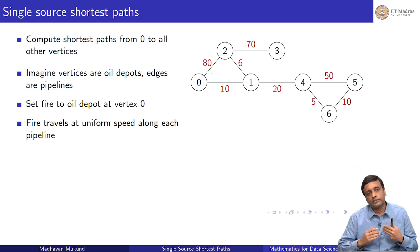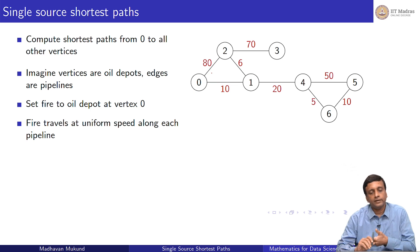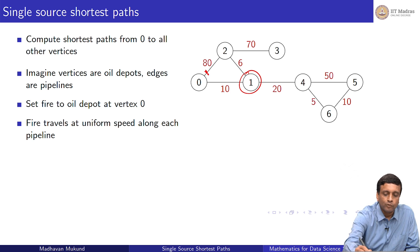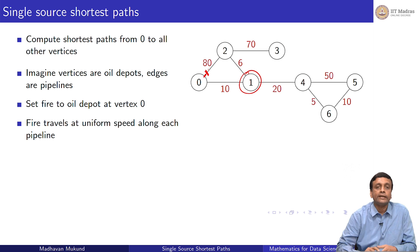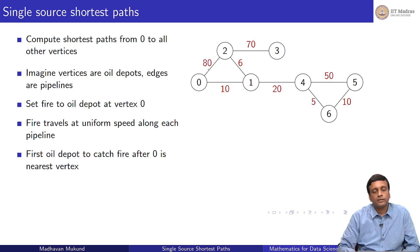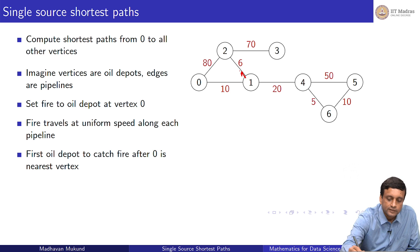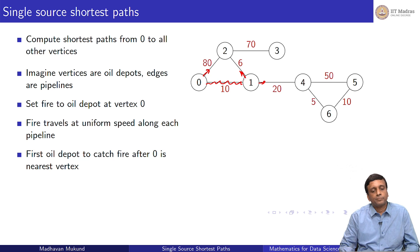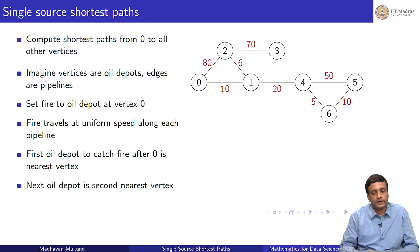If the fire is traveling at a uniform speed, after some amount of time this one will burn. Because this edge is 10 and that edge is 80, the fire would have only reached about one eighth of the way along the edge to 2. Once the next vertex burns, it will start fires in new directions. This is the intuitive idea that we want to capture.